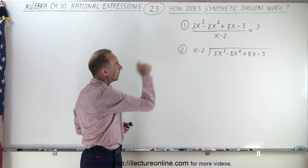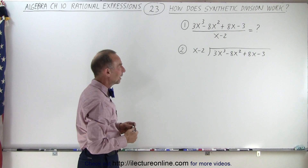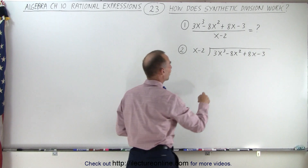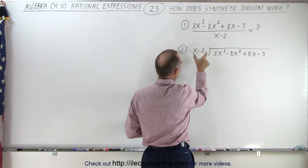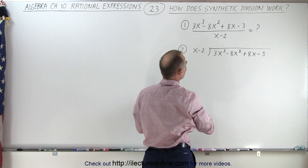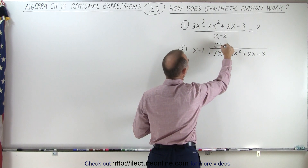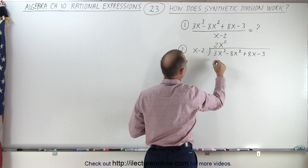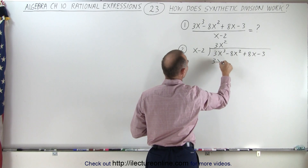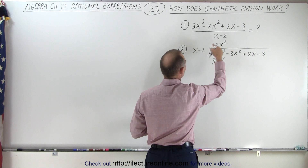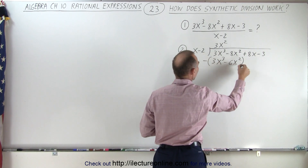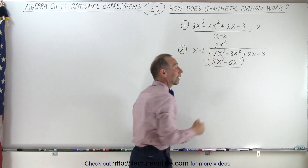So here we have an example. We have a numerator divided by x minus 2, and we're going to use long division to get the answer. So first we write x minus 2 over there, and we ask ourselves what expression times x gives us 3x cubed — the answer would be 3x squared. 3x squared times x gives us 3x cubed, and 3x squared times negative 2 gives us negative 6x squared. Then we subtract these two terms from the two directly above.